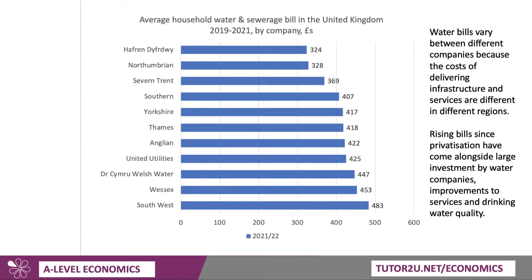This data shows the average bill in the UK in 2021-22 — quite a big spread. Water bills vary; the highest is South West Water at £493 per year, varying because of different costs of delivering infrastructure and services. Water bills have risen by more than inflation since privatisation, partly because the regulator allows water companies to do this in order to generate the profit which can then be invested in the water sector.